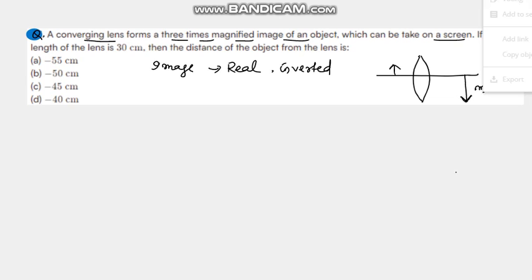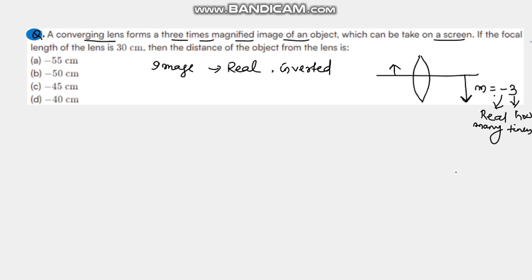The image is three times larger than the object, and since it is inverted it lies below the principal axis. So the magnification will be minus three. The minus sign indicates that it is a real image, and the three indicates how many times it is magnified. If it were a virtual image, it would be upright and above the principal axis, giving plus three, but since it is a real image, the magnification is minus three.